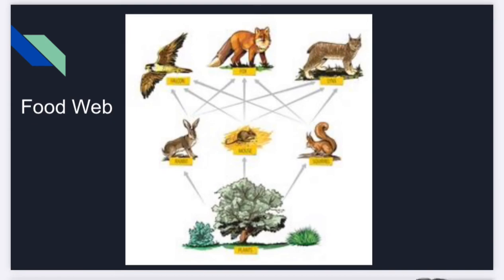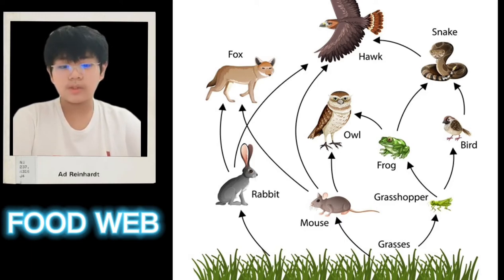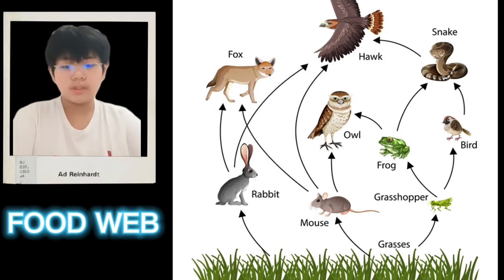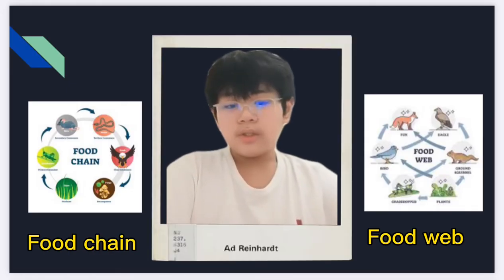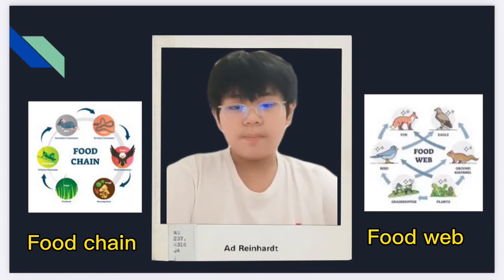Next up, we have the food web. A food web is a natural interconnection of food chains and a graphical representation of what eats what in an ecological community. Another name for the food web is the consumer-resource system. In simple words, a food web is just multiple food chains linked together. Now you know the difference between the food chain and the food web.